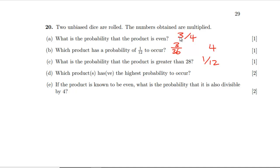Which product or products have the highest probability to occur? We're going to have symmetry about the center and a wide range of numbers. We don't want primes like five because that limits combinations. Six has a lot of factors: one times six, two times three, six times one, three times two — giving four permutations, which is better than most others.